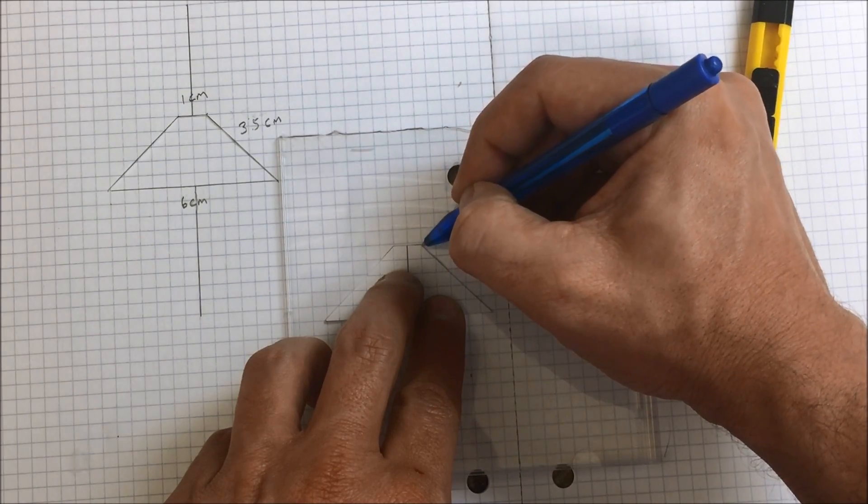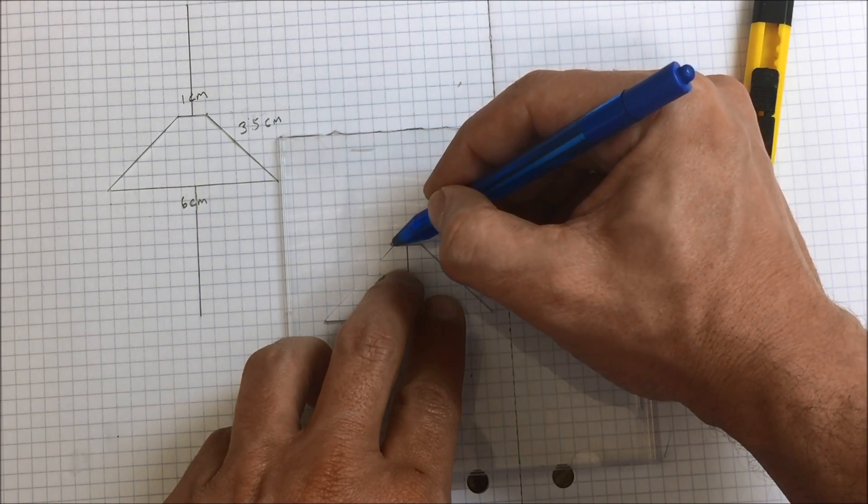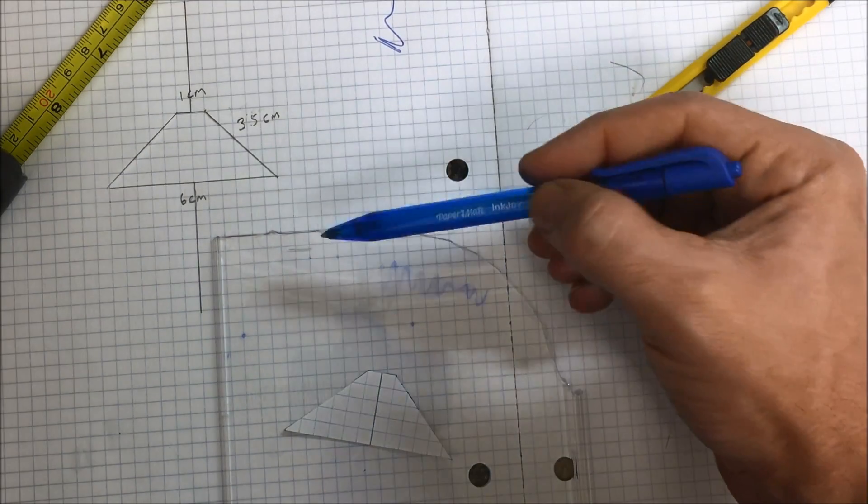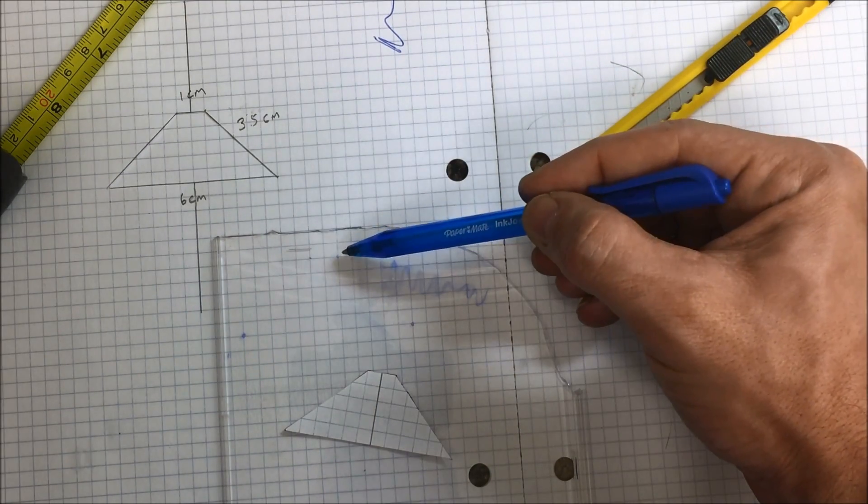Now just line up the shape that you've created and what I did is I put a dot on each of the edges. There you go.